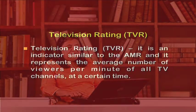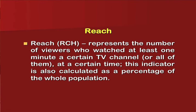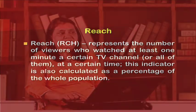Television Rating, or TVR, is an indicator similar to AMR. It represents the average number of viewers per minute across all TV channels at a certain time, measuring the total connected audience to the television system. Reach represents the number of viewers who watched at least one minute of a certain TV channel at a certain time. This indicator is also calculated as a percentage of the whole population — how many people watched a particular channel relative to the total available population.